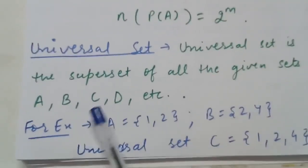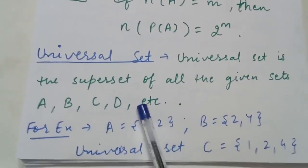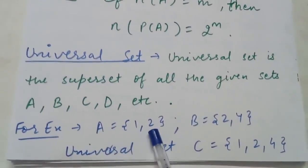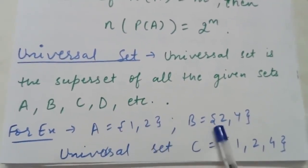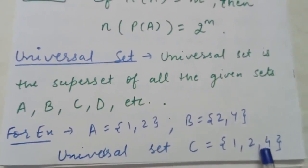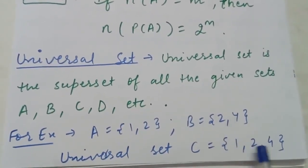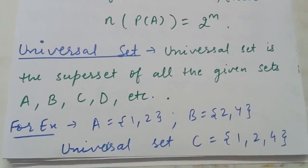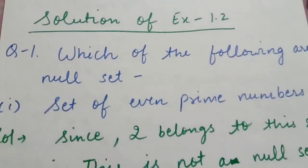Now comes the universal set. The universal set is the superset of all the given sets A, B, C, D. For example, if A = {1, 2} and B = {2, 4}, the universal set C can be {1, 2, 4} since it is a superset of both A and B. C can also be {1, 2, 4, 5} or any other set, but it must include 1, 2, and 4.